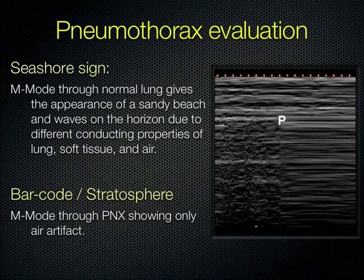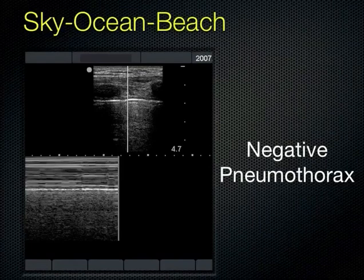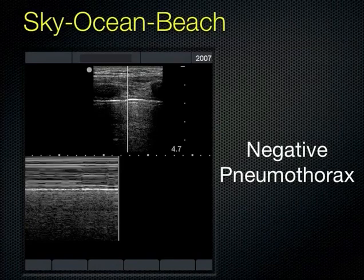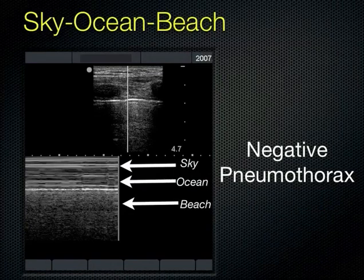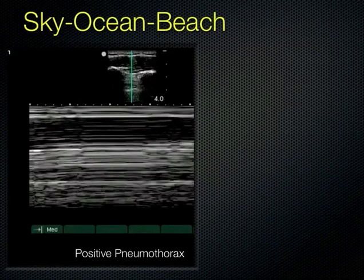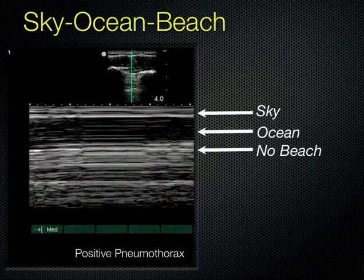Here is an M-mode through the pleural interface showing the sky, then the pleural line as the horizon where ocean meets land, and a grainy beach more inferiorly due to lung motion. By contrast, the other example shows an A-line in the upper picture — could be pneumothorax or normal — but the M-mode shows no beach. That is a pneumothorax, which looks like a barcode. In your models today, if you ask them to hold their breath during M-mode, you'll be able to see the stratosphere or barcode sign, since a non-moving lung won't produce graininess.